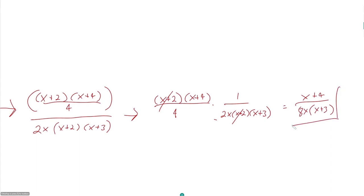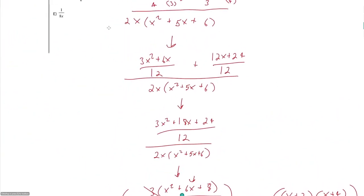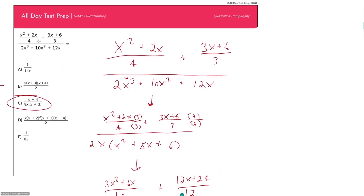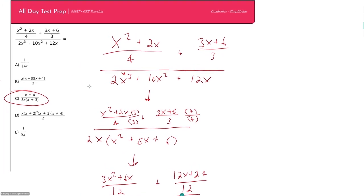So our final simplified answer is (x + 4) over 8x(x + 3). Sometimes this is fully simplified, but with these questions you need to look at the answer choices to see how they want it formatted. Looking at the choices, answer C is exactly what we got. This question might look complicated but it should not be — it's mostly review of how to combine fractions and how to factor. I would say this is a 500 to 600 level GMAT question, so you should be able to do it backwards and forwards.